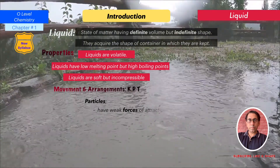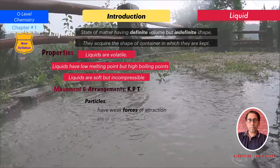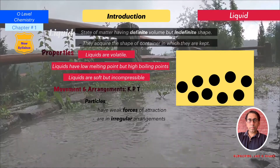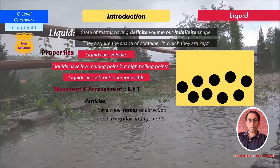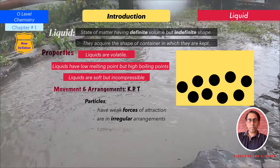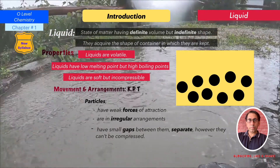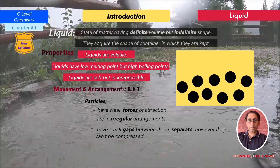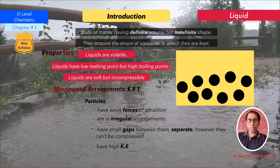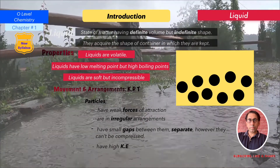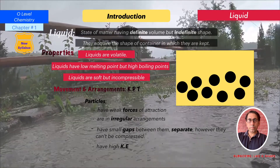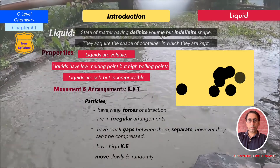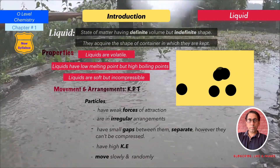Particle movement and arrangement in liquids according to kinetic particle theory: particles have weak forces of attraction. Particles are in an irregular arrangement — an irregular packing pattern — as seen in the picture. Particles have small gaps between them; they are slightly separated but still cannot be compressed. Particles have high kinetic energy and move slowly and randomly.